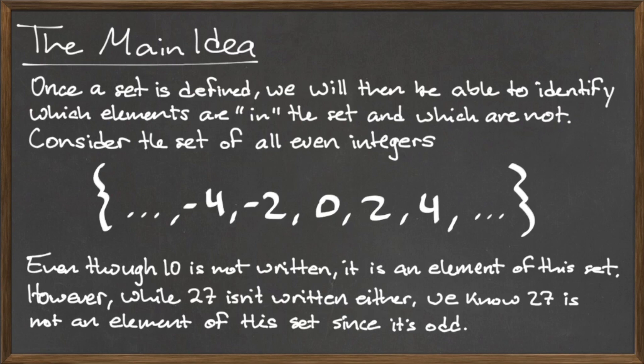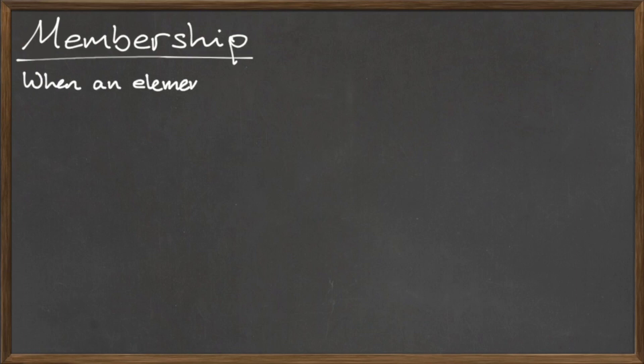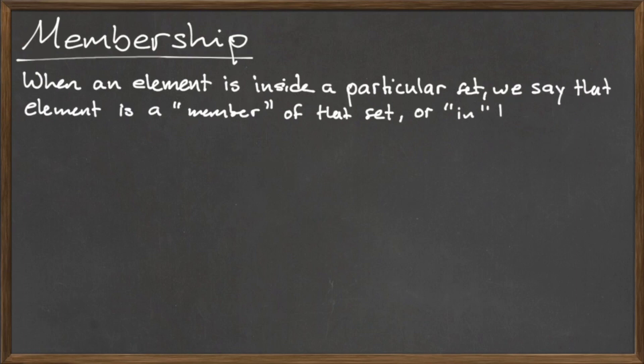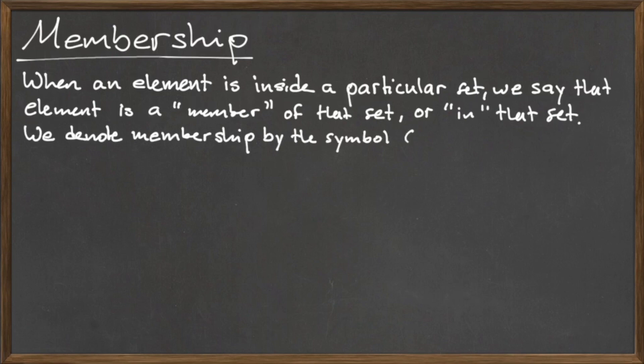When an element is included in a particular set, we say that that element is a member of or is in that set. To denote this membership, we use a special symbol, which is a stand-in for the words is a member of or in. When an element is not a member of a set, we draw a slash through the membership symbol, which is a stand-in for the words not a member of or not in.